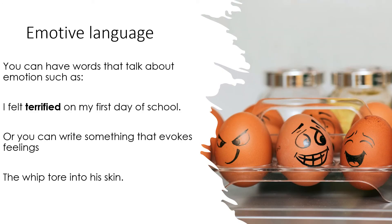Next is emotive language. There are two approaches: you could say 'I felt terrified on my first day at school,' just talking about people's emotions directly. Or you could use it in a more sophisticated way and talk about things that invoke an emotional response — for example, 'The whip tore into his skin.' Even though there's no word that speaks of an emotion directly, it conveys the feeling of terror and pain. If you're doing global warming, talk about the polar bears losing their habitat, or the amount of deaths in certain endangered species, or our children not being able to enjoy the world the way we have. As soon as you've got that emotional response, you've got the reader hooked.